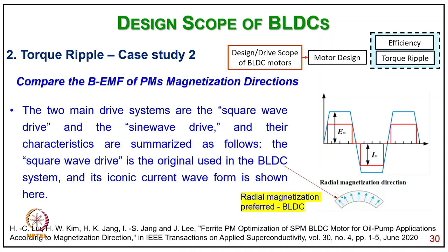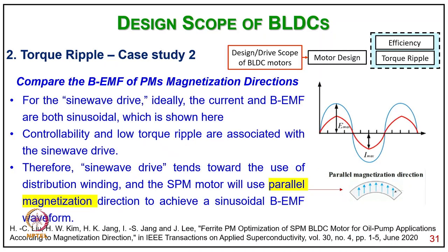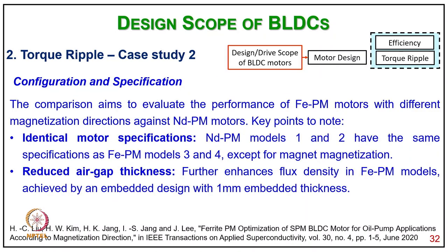The two main drive systems are the square wave and sine wave drives. The square wave drive is the original BLDC motor with a rectangular current waveform. For the sine wave drive, both current and back EMF are sinusoidal, and controllability and low torque ripple are associated with the sine wave drive. Therefore, sine wave drive tends toward the use of distributed winding, and the FEPM motor will use parallel magnetization direction to achieve sinusoidal back EMF.